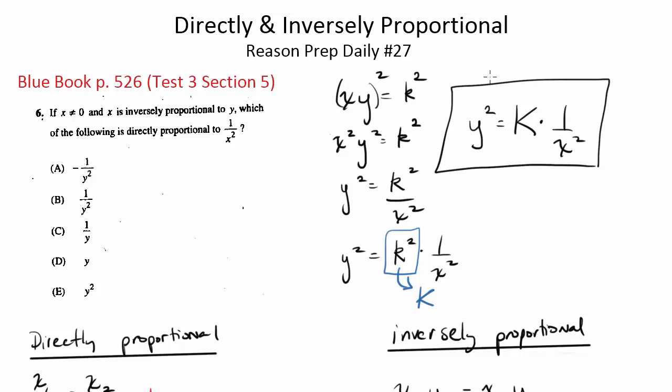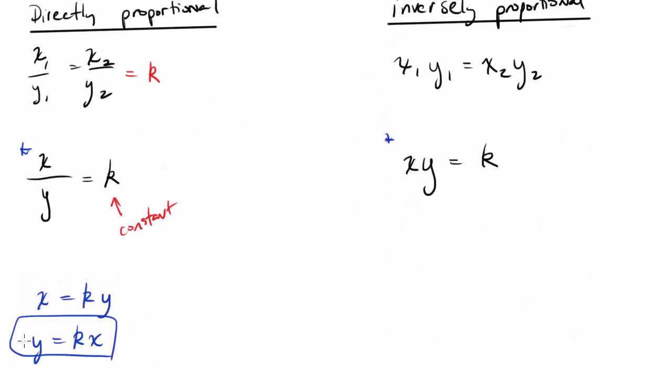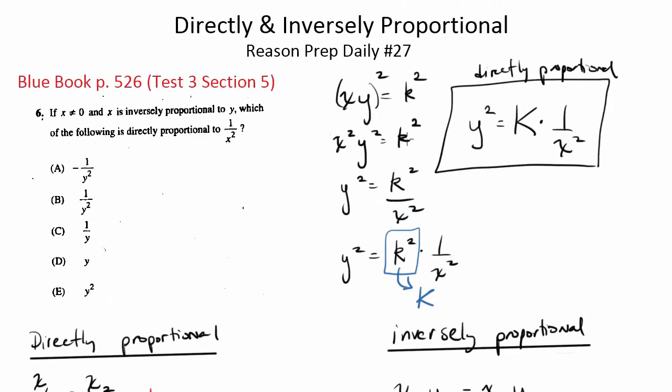Notice this is the directly proportional relationship. If we go back down here, directly proportional was you have a variable equaling some constant times another variable. In this case, we have a variable, y squared, equaling a constant times another variable, which is 1 over x squared, which is exactly what we wanted to get. So what is directly proportional to 1 over x squared? It's y squared. So that's why the answer to this one is choice E.